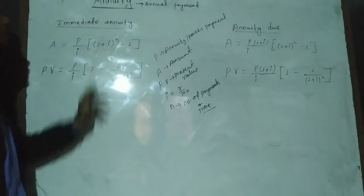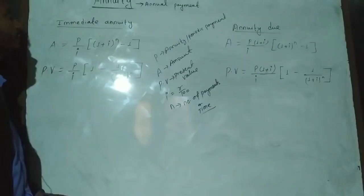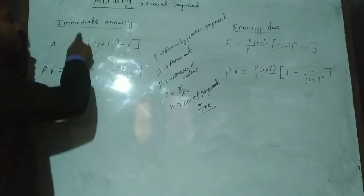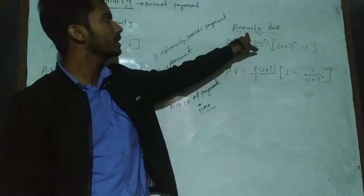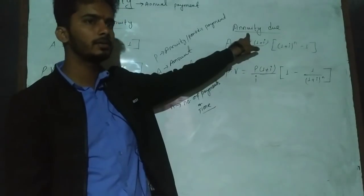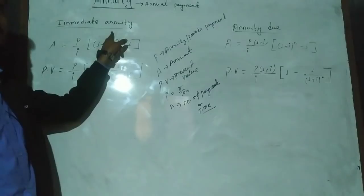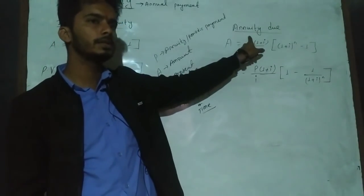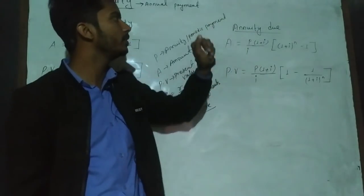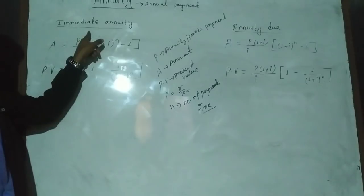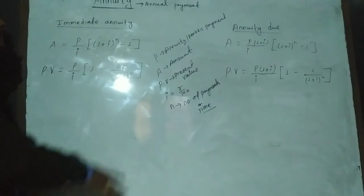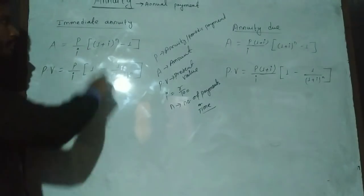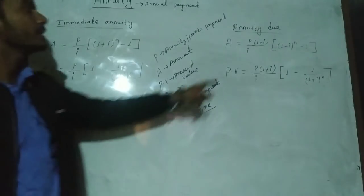In annuity, we have two types: immediate annuity and annuity due. The difference is that in immediate annuity, the payment is made at the end of the period — for example, at the end of the first year. In annuity due, the payment is made at the beginning of the period — the start of the year.